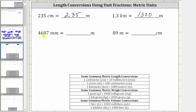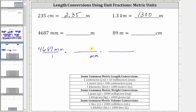Next, we have to convert 4,687 millimeters to meters. We write 4,687 millimeters as a fraction with a denominator of one. Notice for this example there's not a direct conversion from millimeters to meters; we can convert millimeters to centimeters, and then centimeters to meters. Because we'll use two conversions, we need two unit fractions. Let's first convert millimeters to centimeters, since one centimeter is equal to 10 millimeters. We want millimeters to simplify out, so we have millimeters in the denominator and centimeters in the numerator. The unit fraction is one centimeter over 10 millimeters.